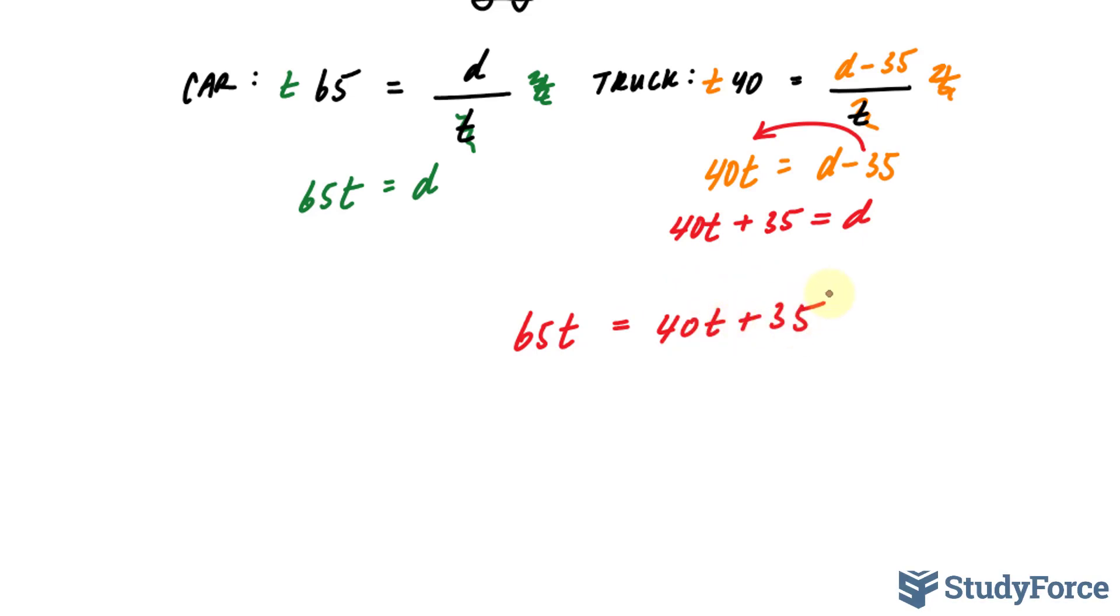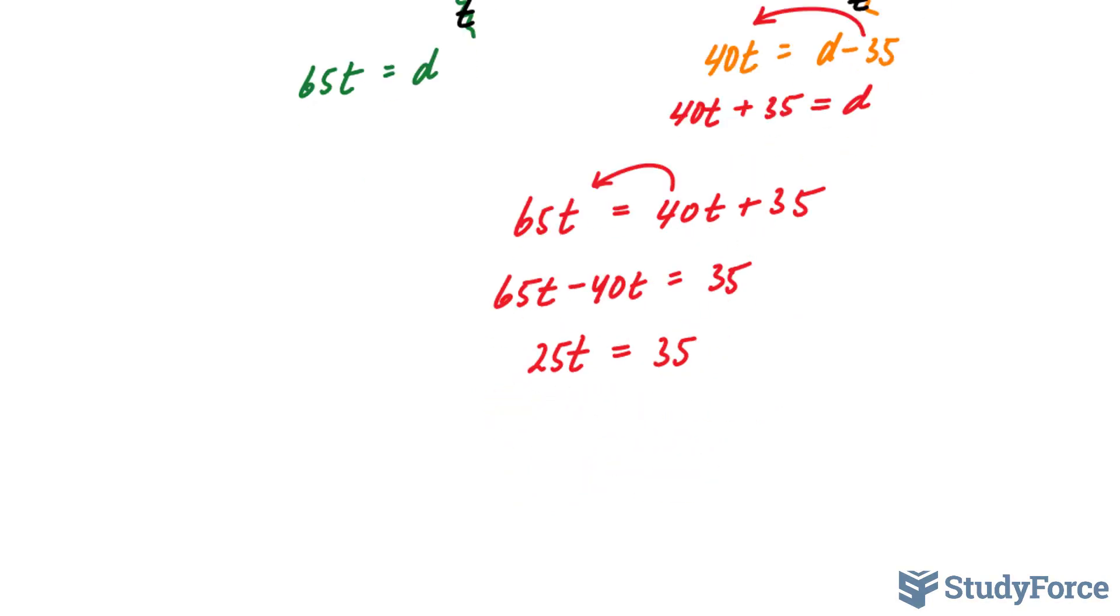Now, I'm left with a linear equation with one unknown. I can collect like terms, and then find my unknown. Bring that 40T over. That makes it 65T minus 40T is equal to 35. This becomes 25T. I just combine these two like terms.